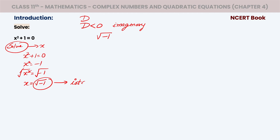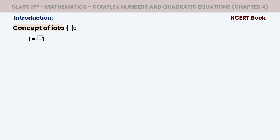What do we call it? IOTA. Whenever you see the square root of minus one anywhere, it is not possible to take the root of a negative number in the real number system. So we denote this negative root as IOTA, represented by the symbol 'i'. Whenever you encounter IOTA, its value is √(−1).